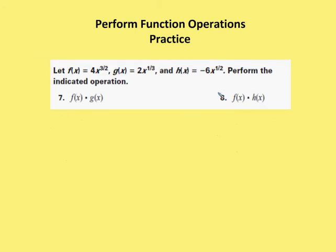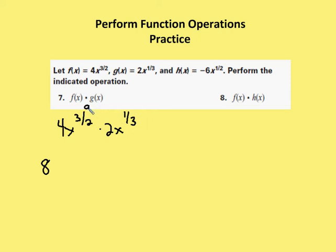Moving on, now I'm going to multiply the given operations. I have f of x, which is 4x to the 3 halves, times g of x, which is 2x to the 1 third. I'm going to multiply my coefficients first — I get 8. Then I'm going to use my properties of exponents: I have the same base but different exponents, so I'm going to add the two exponents together. Getting a common denominator: 3 halves is the same as 9 sixths, and 1 third is the same as 2 sixths. 9 sixths plus 2 sixths gives me 11 sixths — wait, that gives me 8x to the 11 sixths. Actually, combining correctly: 9 sixths plus 3 sixths — no, I get 12 sixths, which is the same as 8x squared.